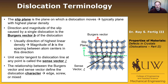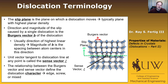The relationship between the Burgers vector and the sense vector defines what's called the dislocation character. That character is typically defined as either edge, screw, or mixed. We're not going to delve too much into those definitions, as we're trying to move more rapidly to engineering applications. That's all you really need to know about dislocation terminology for this class.